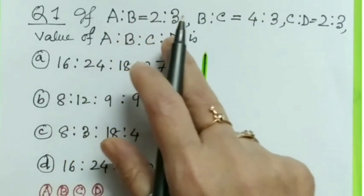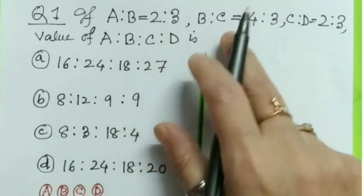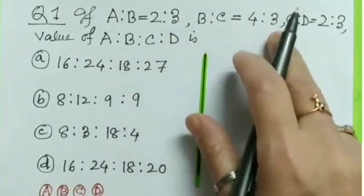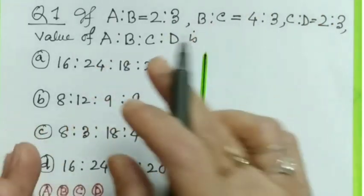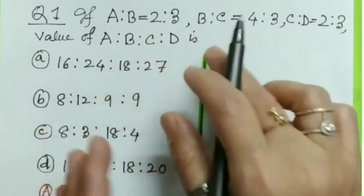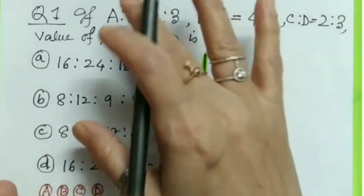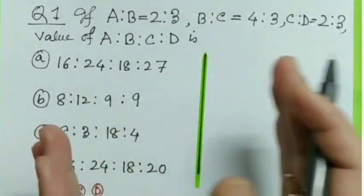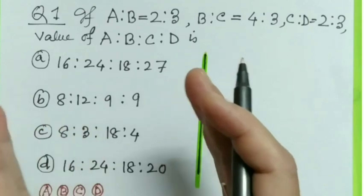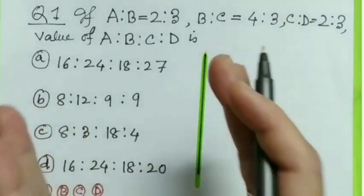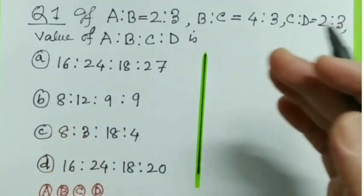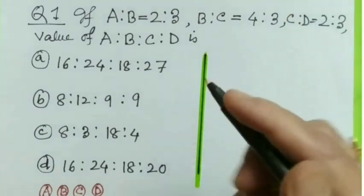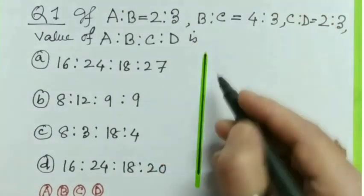Question 1: If a is to b equals 2 is to 3, b is to c equals 4 is to 3, c is to d equals 2 is to 3, find the value of a is to b is to c is to d. Four options are given. I'm going to use a very interesting shortcut method, so children just follow me.